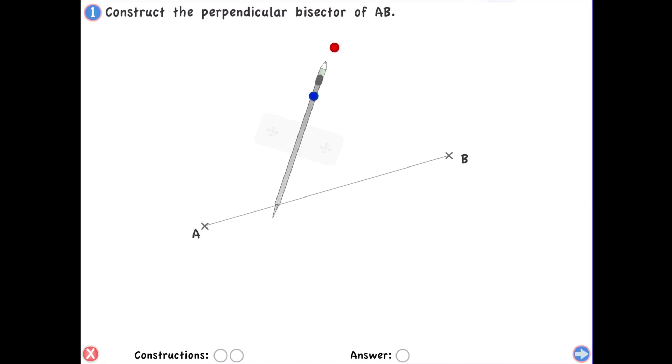So you start off with your compass and here we have two points A and B of which we need to construct a perpendicular bisector.